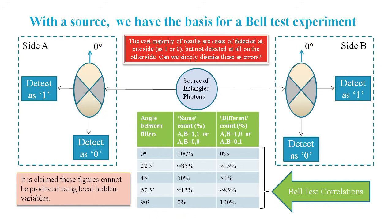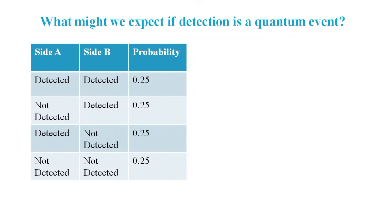Bell test experiments are prone to a lot of experimental errors, but it's only by dismissing all the one-sided detections as experimental errors that a case can be made in favor of spooky action.